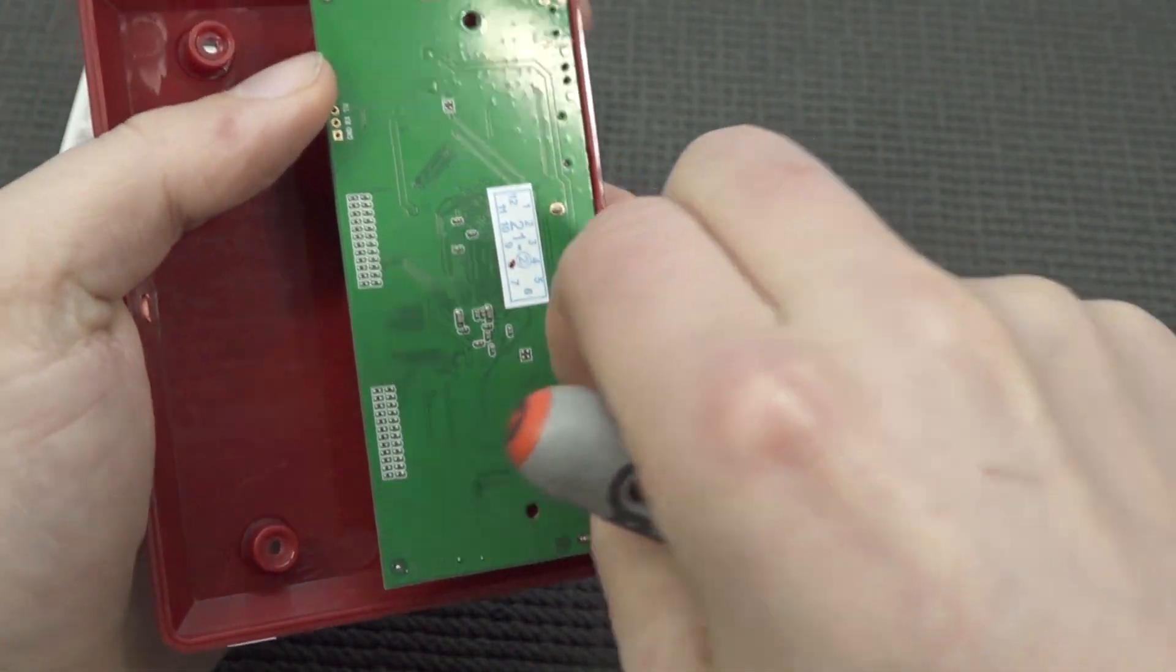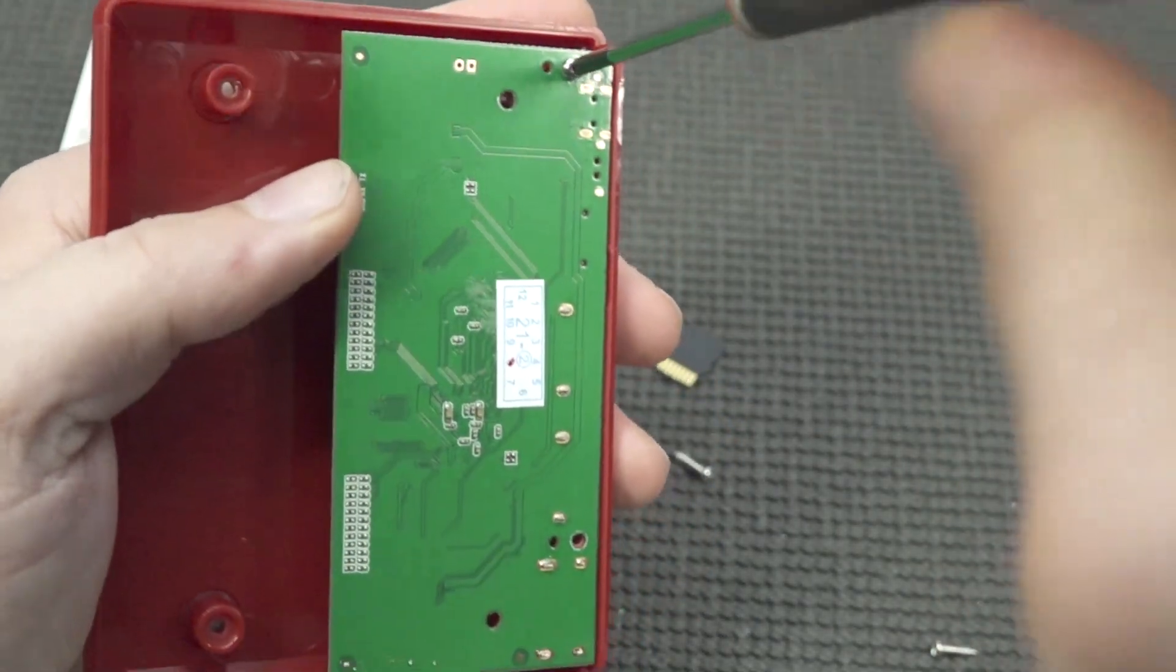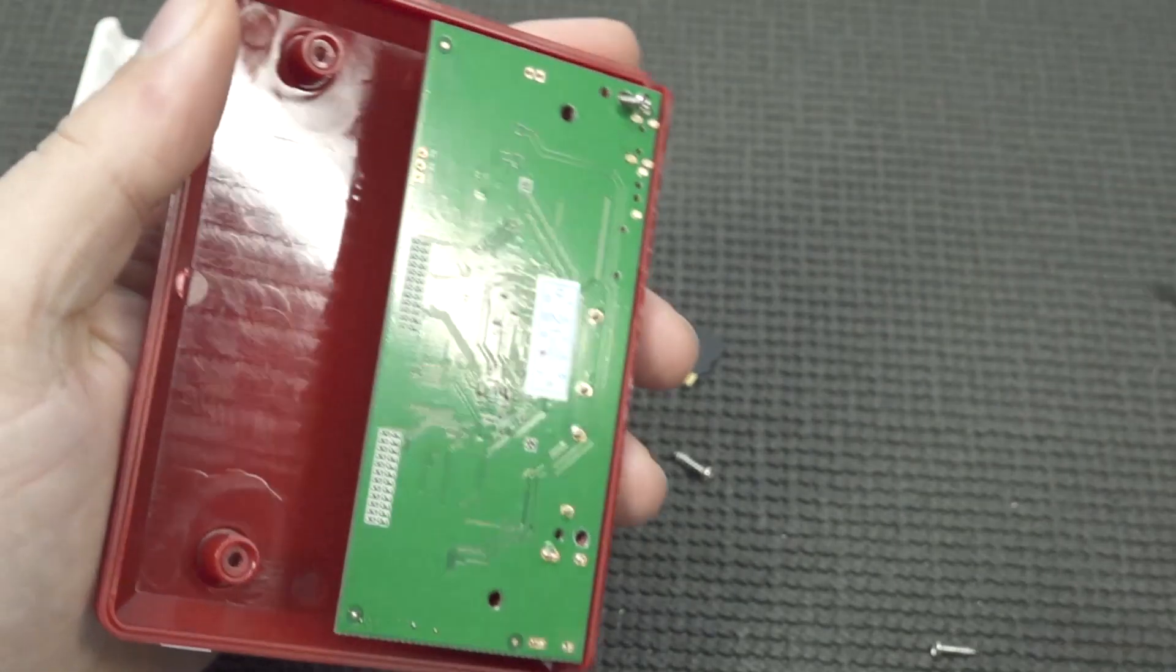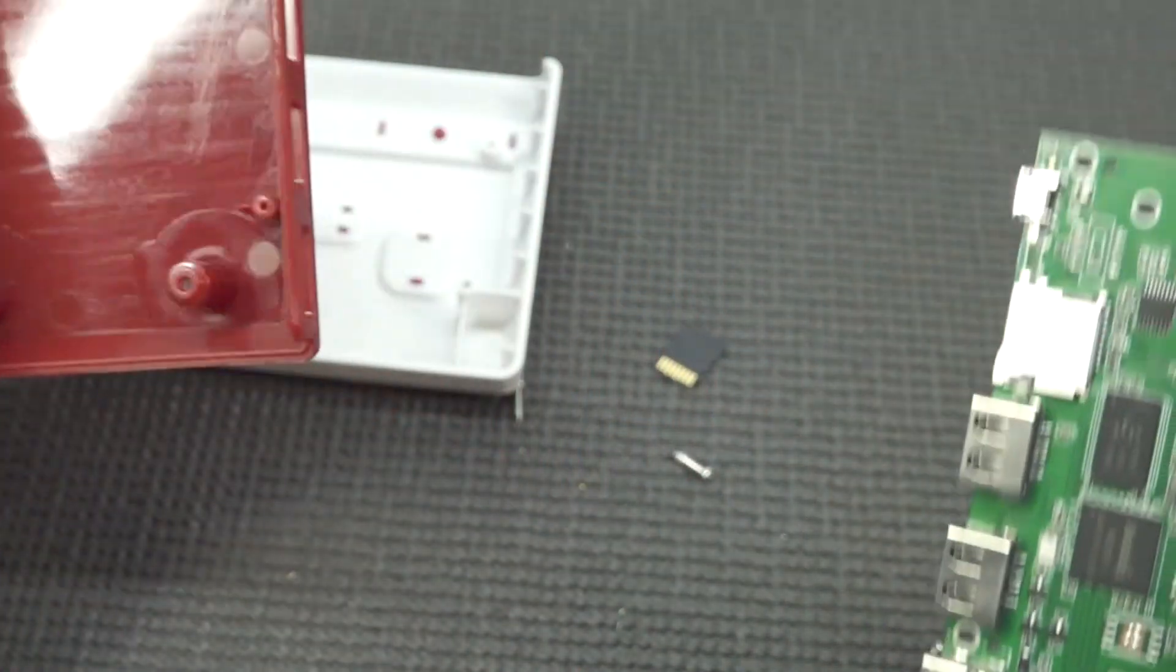All right, screw number one, and nice. Remove screw number two over here. That's more plastic than it's basically actually going to be a normal PCB inside.